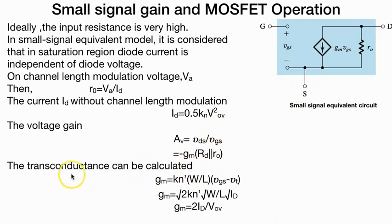GM transconductance formula can be calculated with three formulas. Remember these three for different MOSFET.